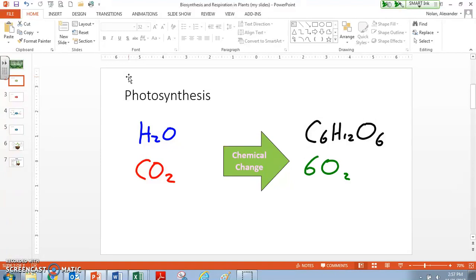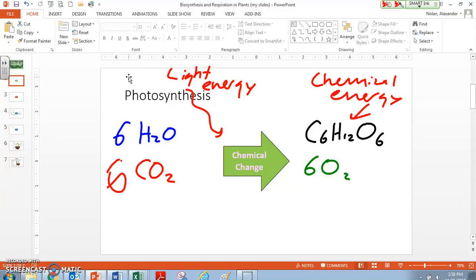Now if we were to balance these out, we could end up with 6O2, 6H2O, and 6CO2. But the important thing is to recognize that our plant is taking in water and carbon dioxide and producing sugar and oxygen. Photosynthesis is being driven by light energy, and it goes from light energy to chemical energy, or food energy, in our sugar.